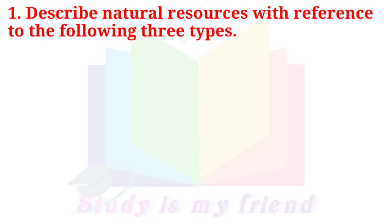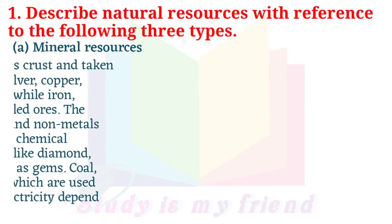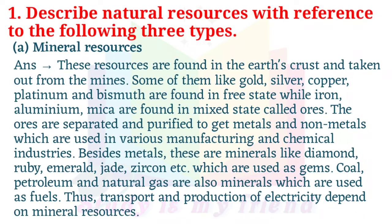Question 1: Describe natural resources with reference to the following three types. A. Mineral Resources: These resources are found in earth's crust and taken out from mines. Some of them like gold, silver, copper, platinum and bismuth are found in free state, while iron, aluminium, and mica are found in mixed state called ores. The ores are separated and purified to get metals and non-metals, which are used in various manufacturing and chemical industries.